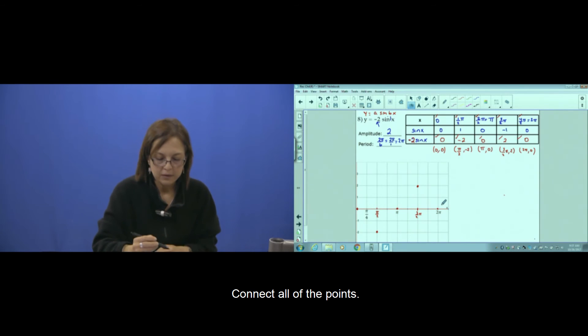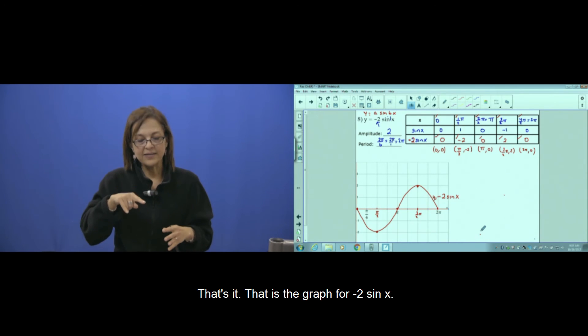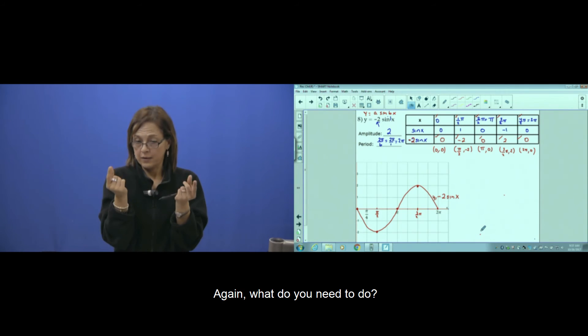Connect all the points. And that's it. That is the graph of negative 2 sine of x. Again, what to do?